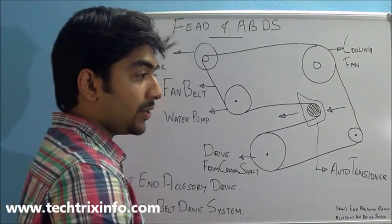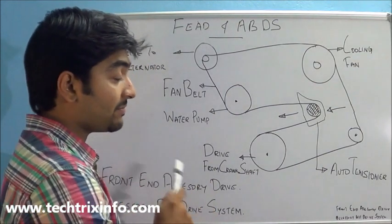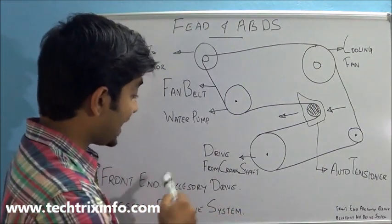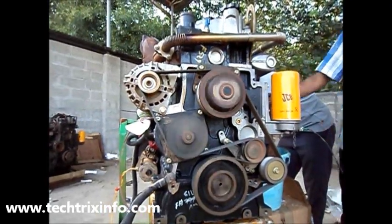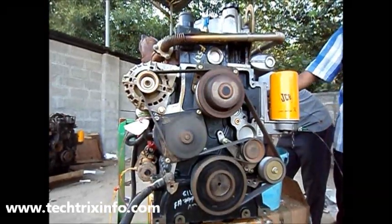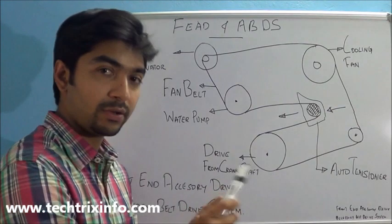So you can see an Accessory Belt Drive System over here, or a Front End Accessory Drive on an engine real over here. See that's how it looks like.